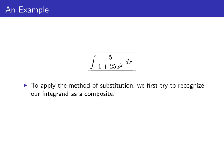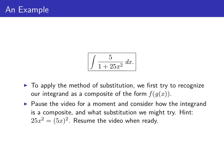To apply the method of substitution, we try to recognize our integrand as a composite. So pause the video for a moment and see if you can rewrite the integrand as a composite of functions, and then figure out what substitution we might try. As a hint, notice that 25 x squared is the square of 5 x. Resume the video when you're ready.